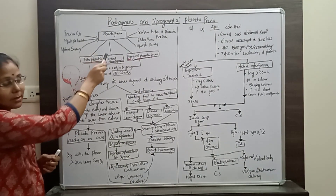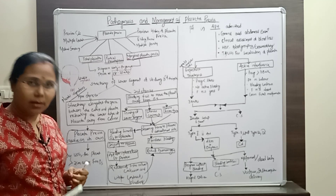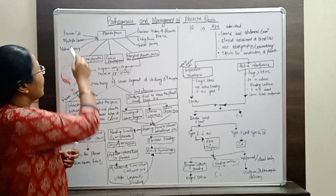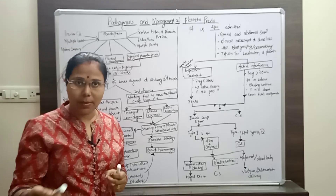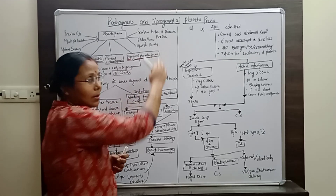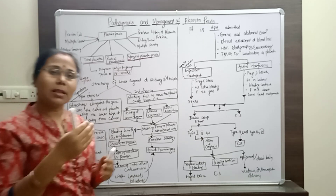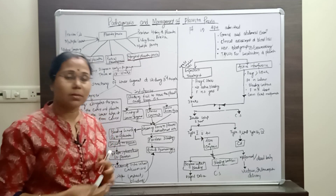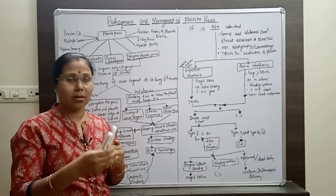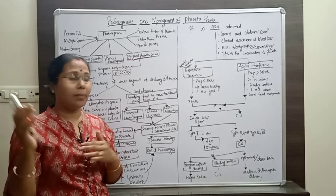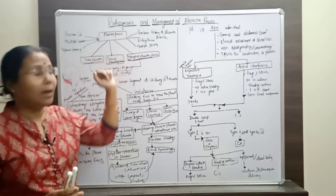We also discussed the risk factors that cause placenta previa. These include: previous history of cesarean section, where there is more chance of placenta previa; multiple gestation; maternal smoking or using cocaine, which can also cause placenta previa; previous history of placenta previa, meaning a mother who delivered previously with placenta previa has a higher chance in subsequent pregnancies; elderly primipara — mothers who marry or deliver at an older age; and multiple parity. These are the six risk factors.